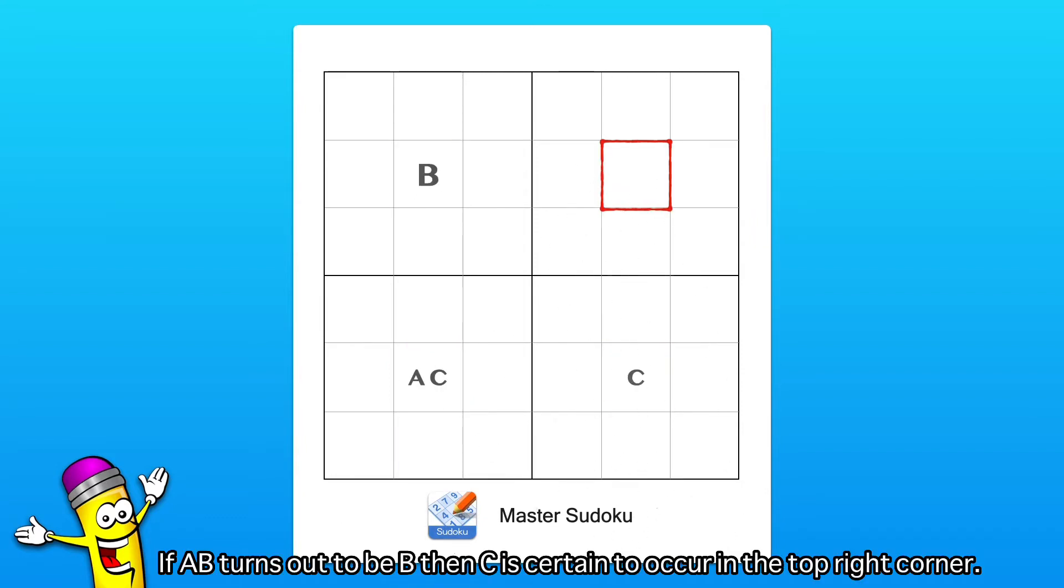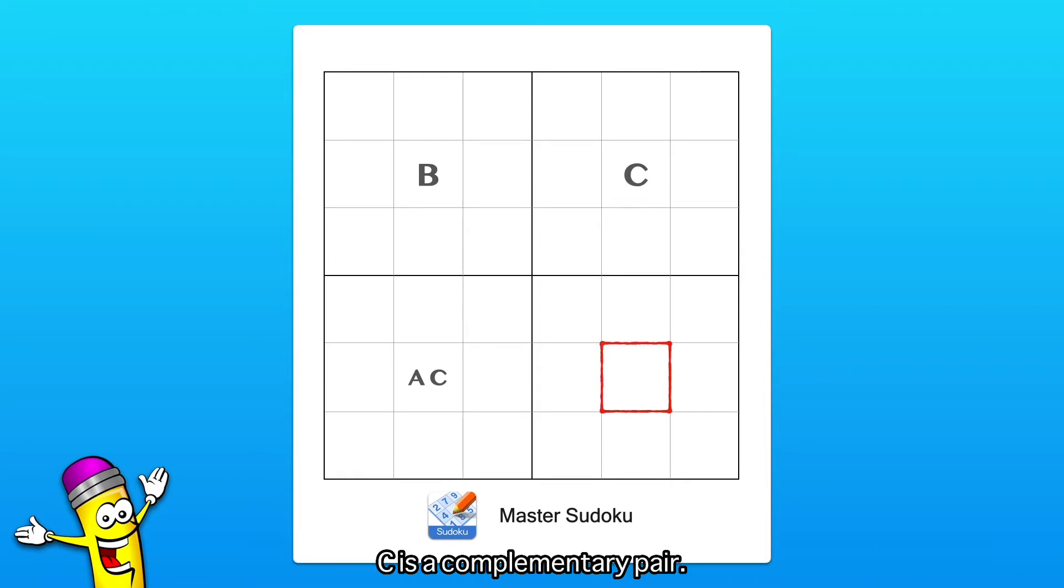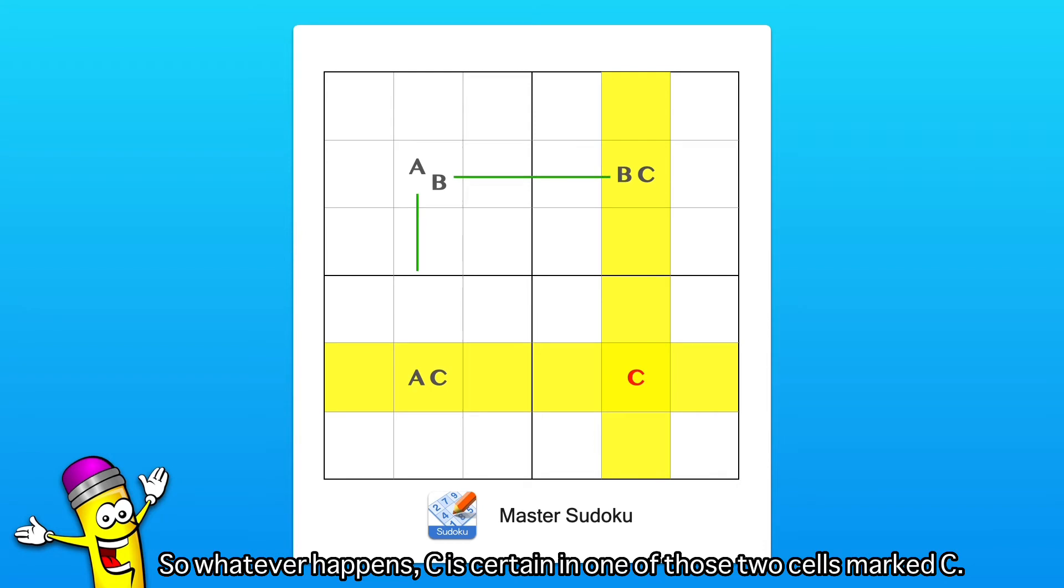If A, B turns out to be B, then C is certain to occur in the top right corner. C is a complementary pair. So whatever happens, C is certain in one of those two cells marked C.